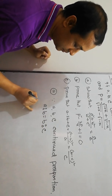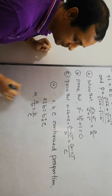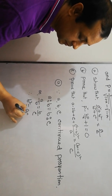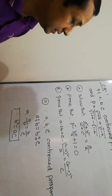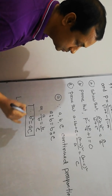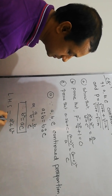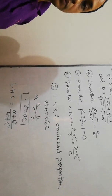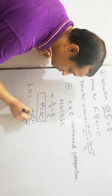We know that by the definition of continued proportion, A is to B equals B is to C, or A/B equals B/C. Then we have B² equals AC. So left hand side equals A² + B² divided by B² + C².